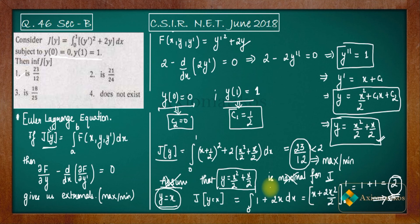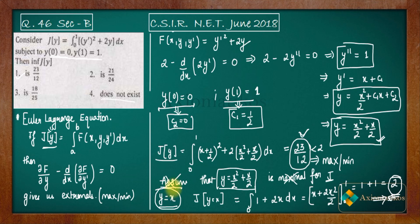The infimum of J[y] is 23/12. The reason for this entire argument is that just computing 23/12 alone doesn't tell you whether it's an infimum or a supremum — if it were a supremum, the answer would be 'does not exist' for the infimum. If you have any queries, ask in the comment section. You can also join our WhatsApp and Telegram groups — links are in the description. Thank you.